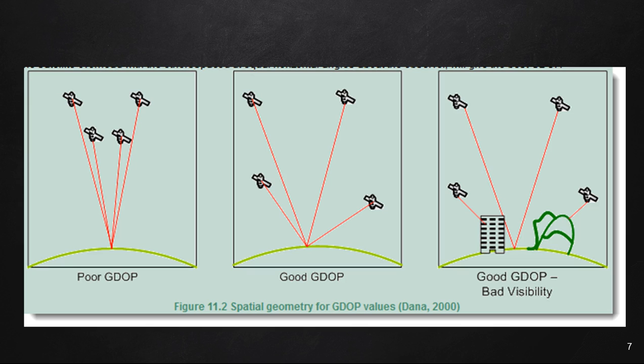Here's looking at the GDOP in examples of poor and good. We have all our satellites on the left-hand side clustered together very closely. This is going to give us a poor GDOP, which means a high value. Here is a good GDOP, which is going to give us a very low value, because our satellites are well spread out. And here is an example of a good GDOP but bad visibility, where the satellites are nice and spread out, but where you're trying to collect data, these satellites are being blocked by some kind of structure or object, whether it's trees, mountains, buildings, or canyons.